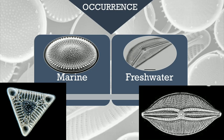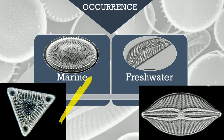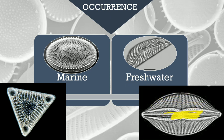Diatoms are found in freshwater and marine water bodies as phytoplanktons, floating in the water. Apart from these water bodies, there are also certain terrestrial forms. We also have diatoms found as epiphytes growing on the surface of other seaweeds like kelp or red algae, and epizoic diatoms growing on the surface of aquatic animals. So while most are aquatic, a few forms are found in terrestrial environments.